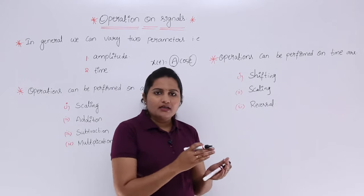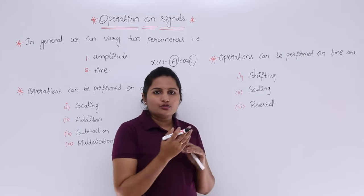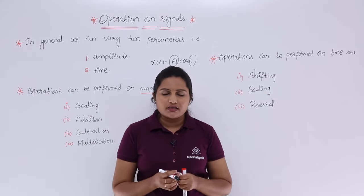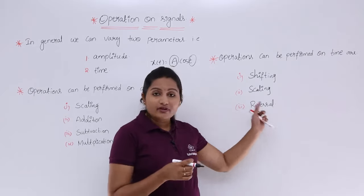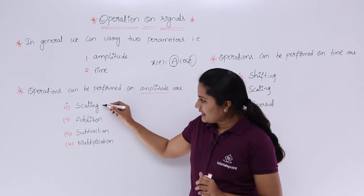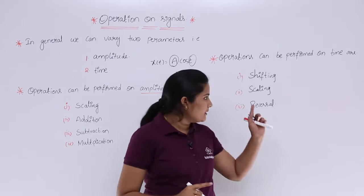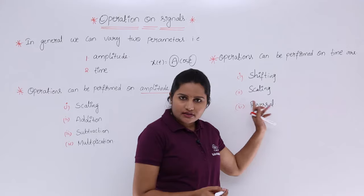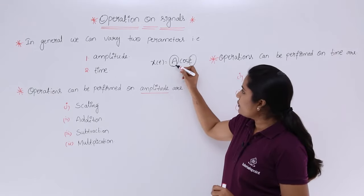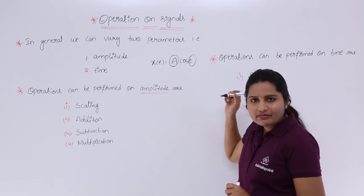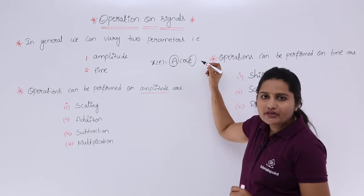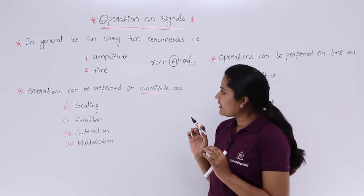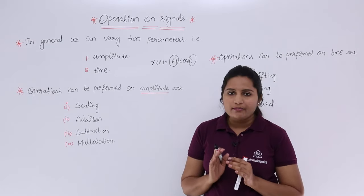By reversing the signal — making the positive axis negative and the negative axis positive — you get the mirror image of the signal. In exams, if they ask for the mirror image of a signal, you simply perform a reversal. There is a significant difference between amplitude scaling and time scaling: in amplitude scaling you scale the amplitude of the signal, whereas in time scaling you change or scale the time of the signal.